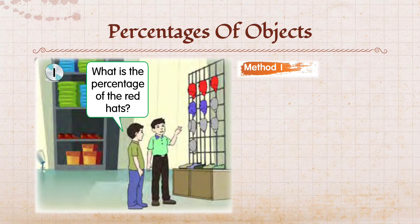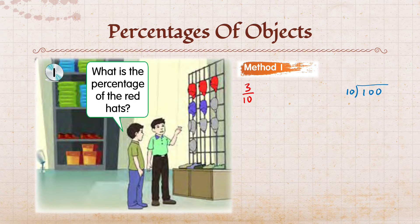Ada 3 topi yang berwarna merah daripada 10 topi. Nombor bahagian bawah ini kita kena tukar jadi 100. Jadi, kita bahagi nombor bahagian bawah dengan 100. 10 darab 10 sama dengan 100. Maksudnya, nombor bahagian bawah kita kena darab dengan 10 supaya jadi 100.